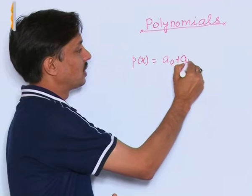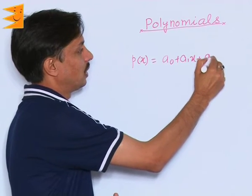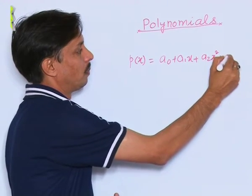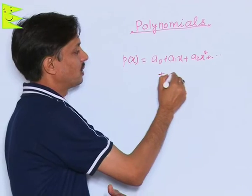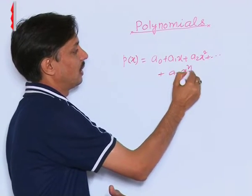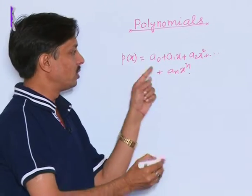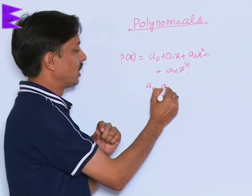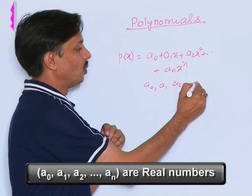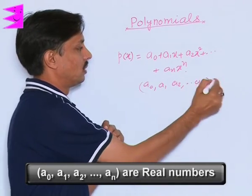It is a0 plus a1x plus a2x² plus ... plus anx^n, where you must understand a0, a1, a2, and an are the real numbers.